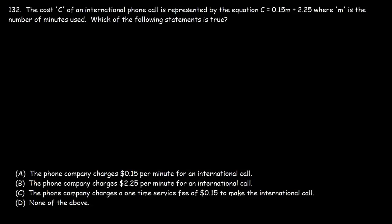Number 132. The cost c of an international phone call is represented by the equation c equals 0.15m plus 2.25, where m is the number of minutes used. Which of the following statements is true? Is it A, the phone company charges 15 cents per minute for an international call? Is it B, the phone company charges $2.25 per minute for an international call? Or is it C, the phone company charges a one-time service fee of 15 cents to make the call? Or D, none of the above? What would you say?